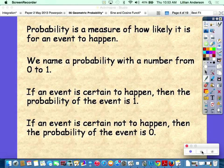Probability is a measure of how likely it is for an event to happen. Probability is always a number between 0 and 1. If an event is certain to happen, then the probability of the event is 1. If an event is certain not to happen, then the probability of the event is 0.